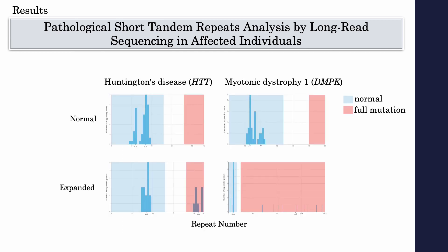The Straglr software also produces plots allowing assessment of the read distribution for the different repeat sizes. The reads in the normal range are found in the light blue area, and reads with full expansions are in the pink area. We see plots for both affected and normal individuals. These plots also capture the repeat instability feature of repeat regions, with reads displaying variable repeat length. This can be seen for myotonic dystrophy, caused by the DM1 expansion in the DMPK gene.